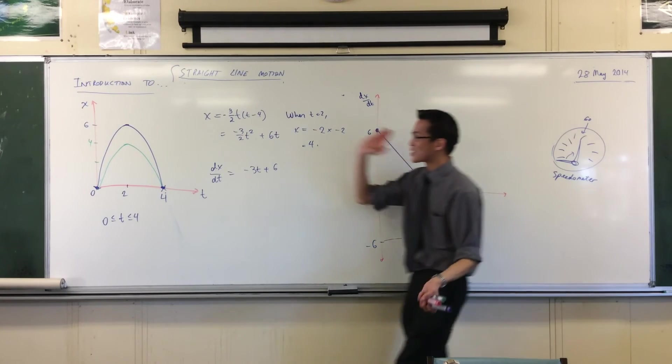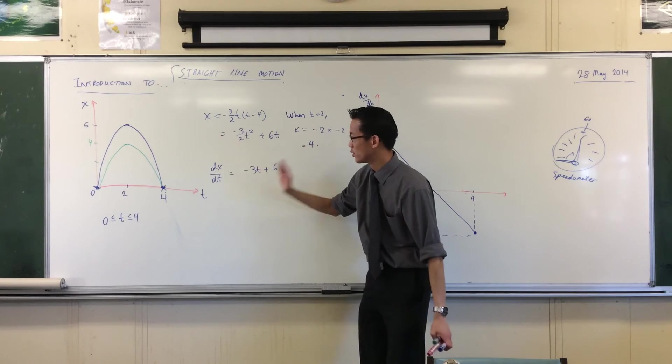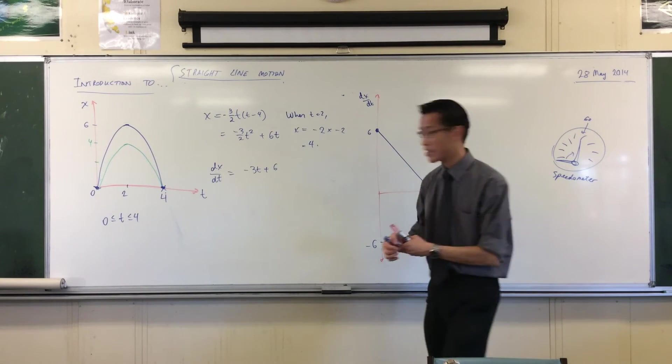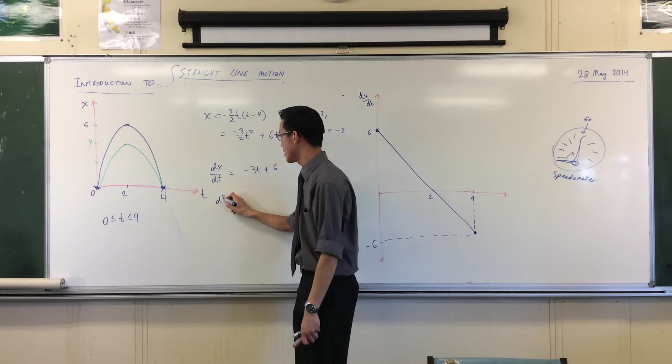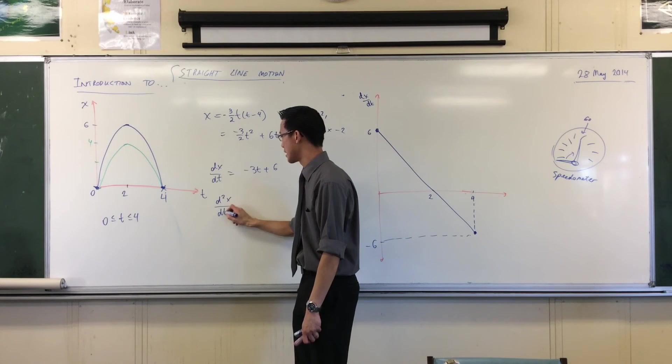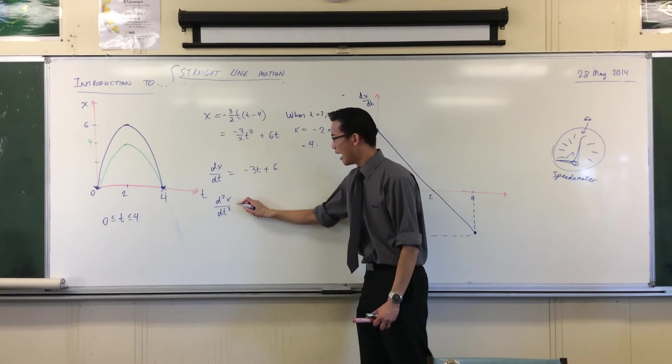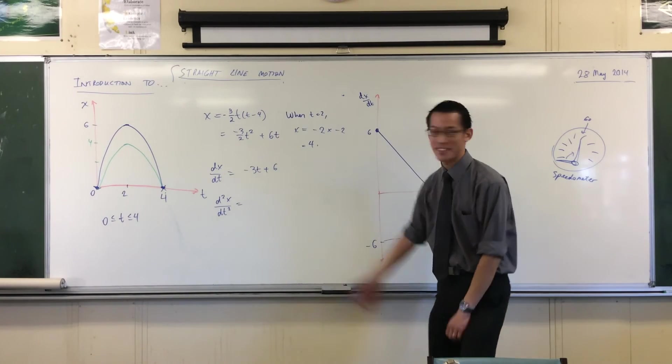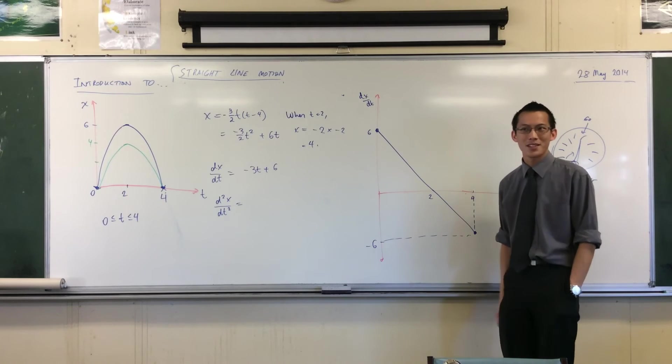Now, we looked at displacement. We looked at velocity. There's one last piece, isn't there? Acceleration. There's acceleration. So that is d squared x on dt squared. Now, again, wearing your calculus hat, you know exactly what acceleration is equal to. What's it equal to? It's just negative three.